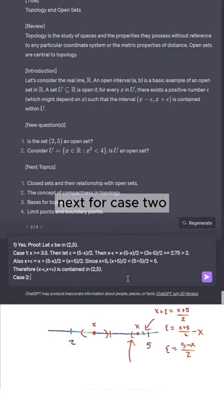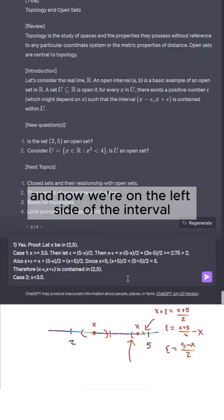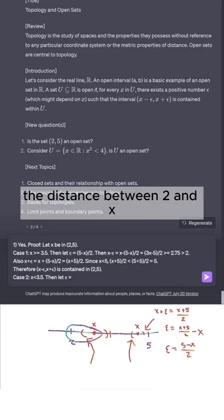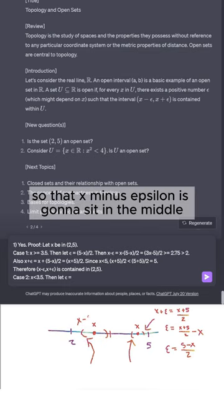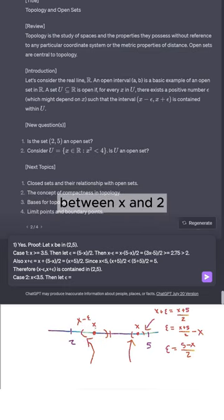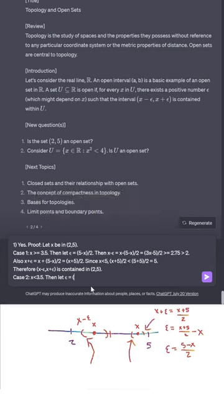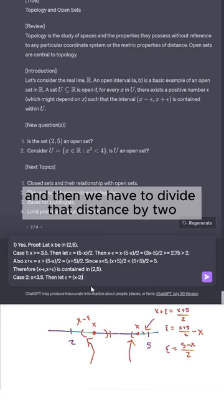Next for case 2, we get to assume that x < 3.5. Now we're on the left side of the interval, so we're going to let epsilon be the distance between 2 and x all over 2, so that x - epsilon is going to sit in the middle between x and 2. So we're going to let epsilon be the distance from 2 to x, which is x - 2, since x is bigger than 2. And then we divide that distance by 2.